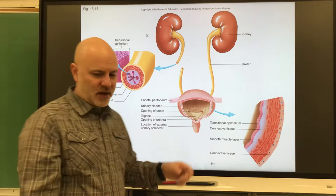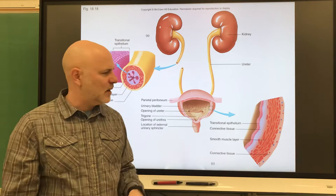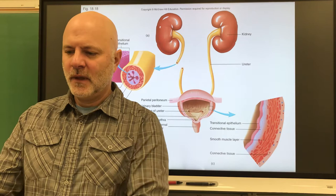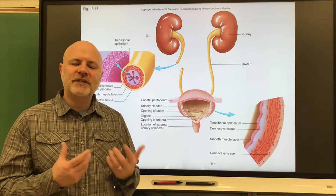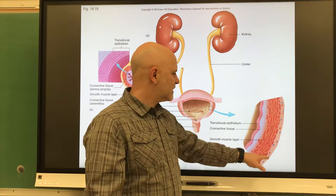All right, so there are four layers to our urinary bladder. We have a mucus coat, then a submucus coat, and then a layer of muscles known as detrusor muscles. So the detrusor muscles are the muscular wall of the urinary bladder, and we contract these to help remove urine from the urinary bladder. And then outside of that is the serous membrane.